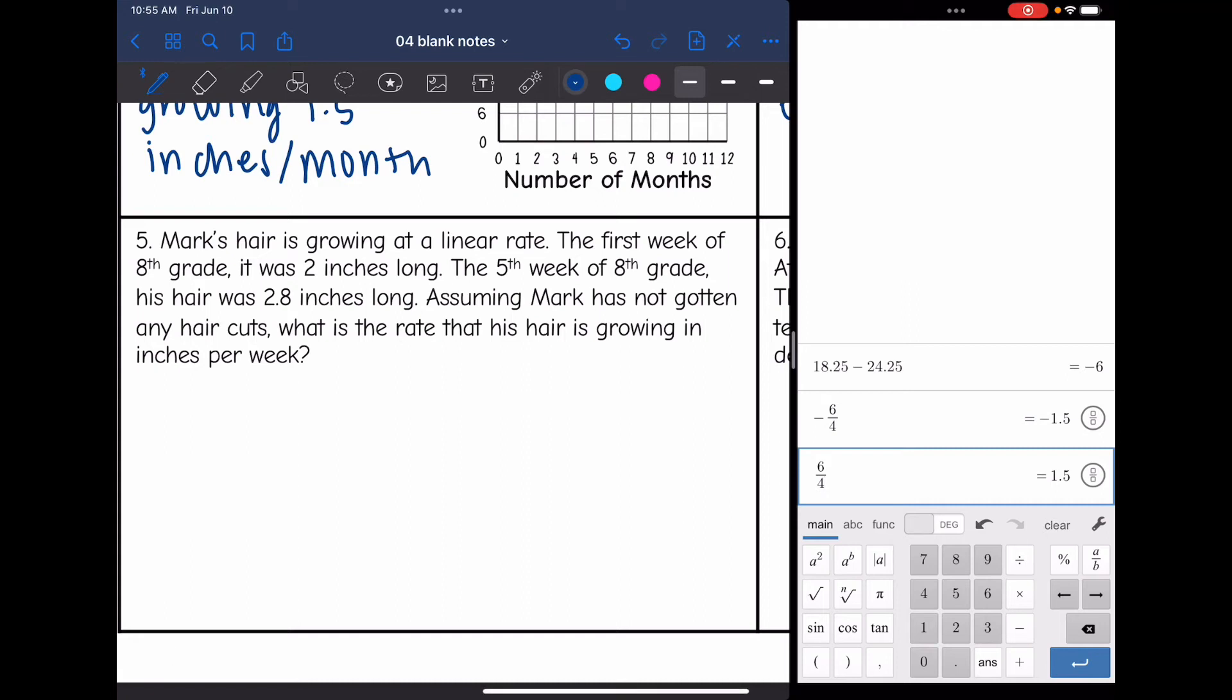Number five says Mark's hair is growing at a linear rate. The first week of eighth grade, it was two inches long. The fifth week of eighth grade, his hair was 2.8 inches long. Assuming Mark has not gotten any haircuts, what is the rate that his hair is growing in inches per week? So I'm going to make a table here. But first I should figure out what I want x and y to represent. So we're talking about his hair growing at a constant rate. And it looks like they are counting by weeks. So I'm going to let x be the number of weeks. And then y will be the length of his hair.